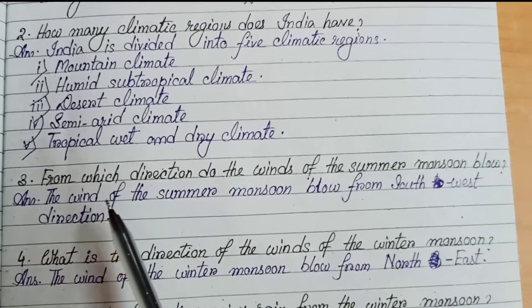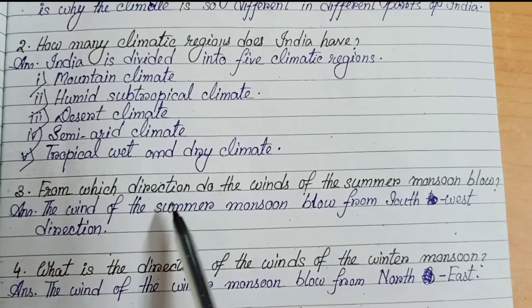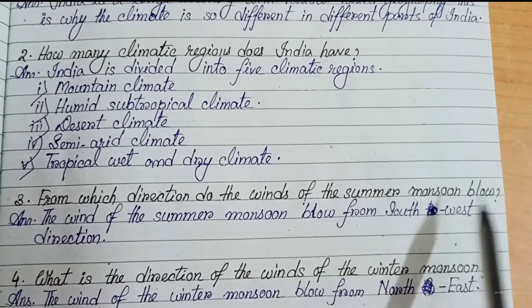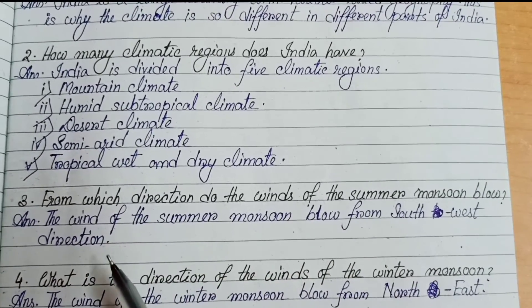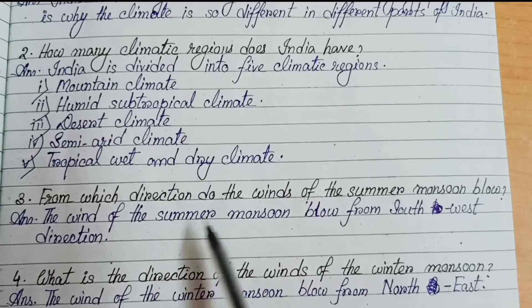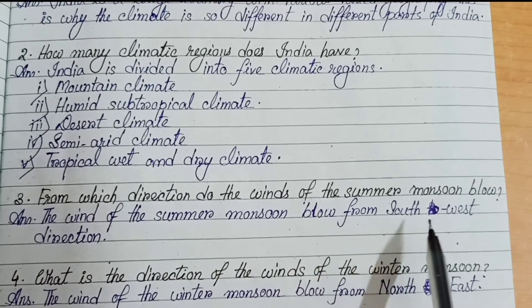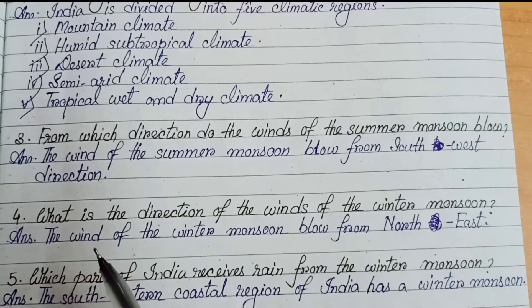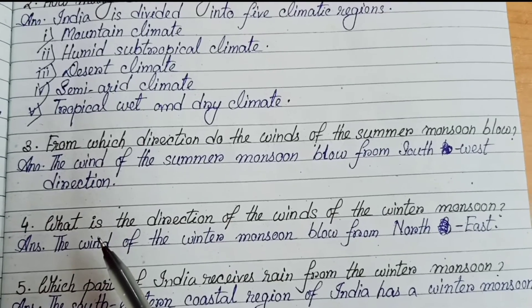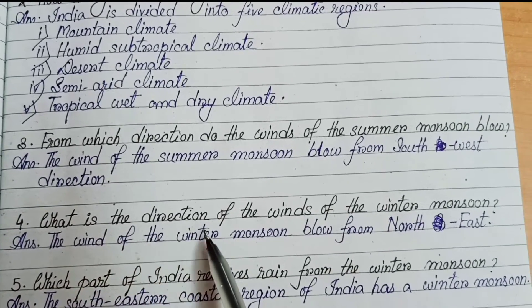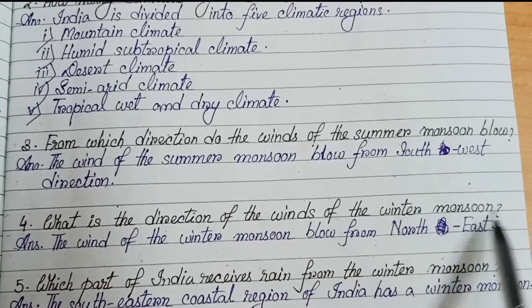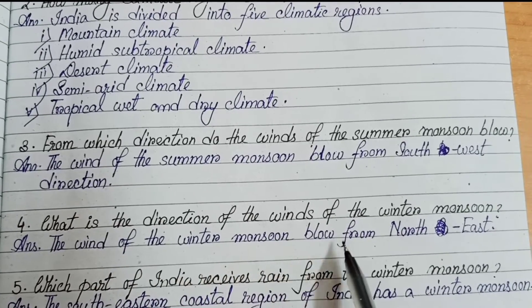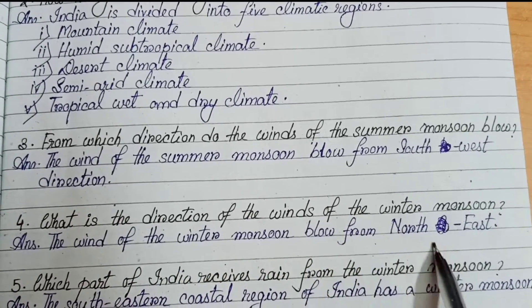Number 3: from which direction do the winds of the summer monsoon blow? The winds of the summer monsoon blow from the southwest direction. Number 4: what is the direction of the winds of the winter monsoon? The winds of the winter monsoon blow from the northeast.